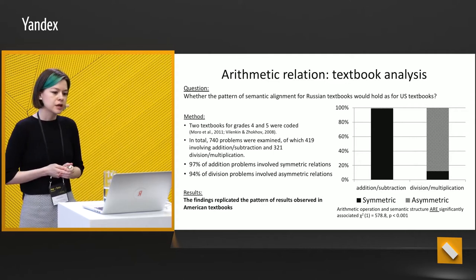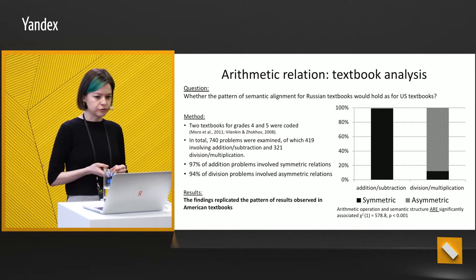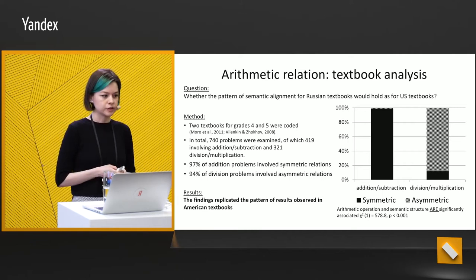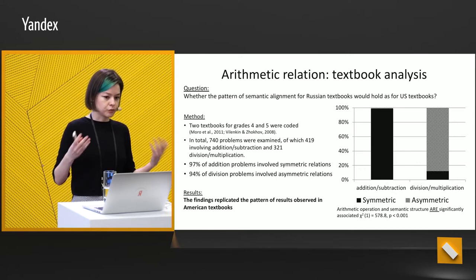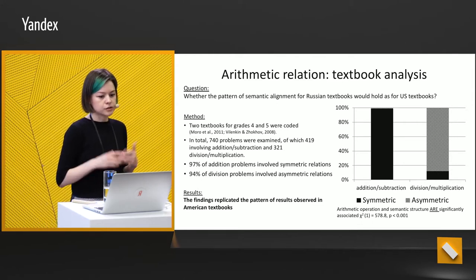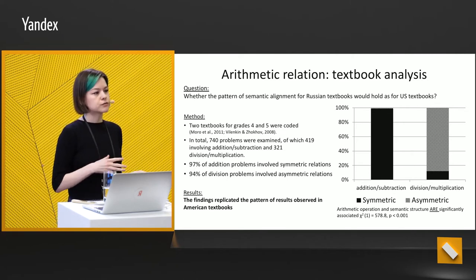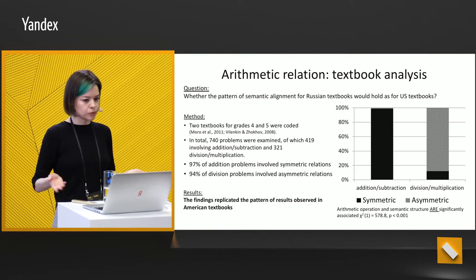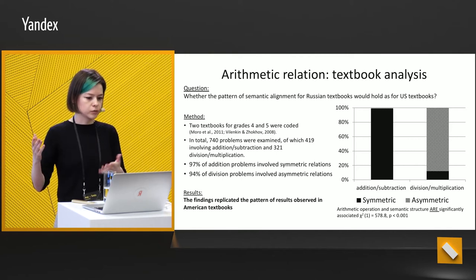First, for arithmetic relations — the textbook analysis. We analyzed two textbooks for grades four and five. These textbooks are very popular and share a very large market share in Russia. The question was whether the pattern of semantic alignment for Russian textbooks would hold as it did for US textbooks. In total, we analyzed 740 problems, classified as addition, subtraction, or division/multiplication problems.